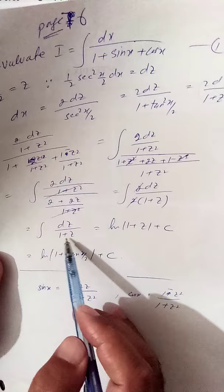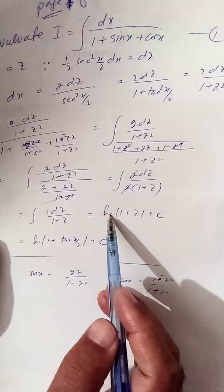The derivative of z, which is 1, is present in the numerator, so the result is natural log of |1 + z| plus constant of integration. This completes chapter 6. You can solve the exercise with the help of this magic substitution.